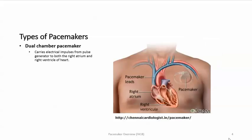The dual chamber pacemaker carries electrical impulses from the pulse generator to both the right atrium and the right ventricle of the heart. The impulses help control the timing of contractions between the two chambers, with one lead in the right atrium and one in the right ventricle.